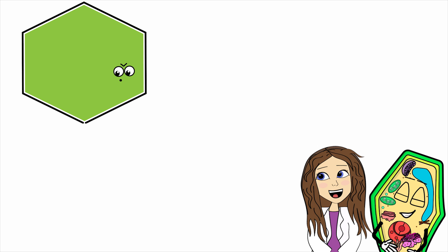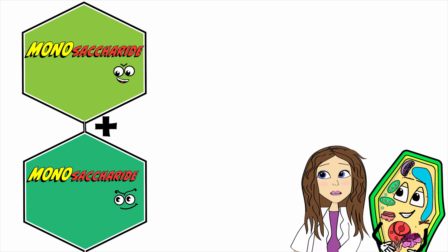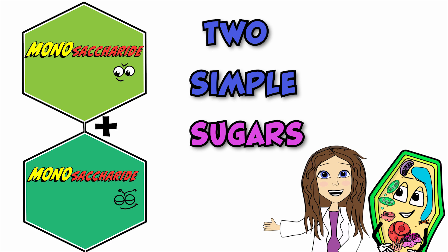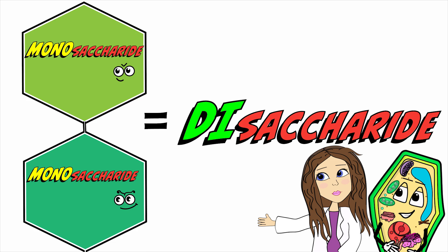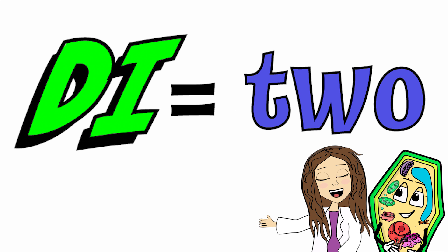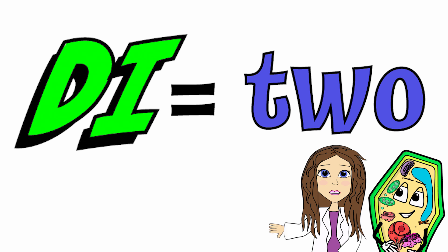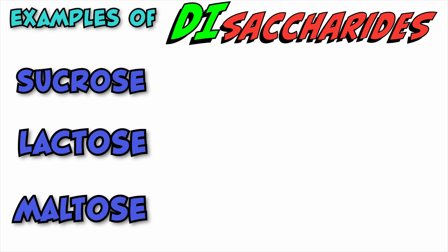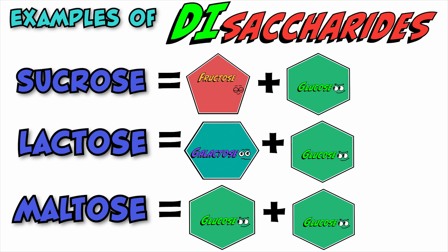If you combine two monosaccharides — two simple sugars — we call that a disaccharide. Di means two, and this makes sense because you have two monosaccharides. Here are some examples of disaccharides; you will see the two monosaccharides that they contain.